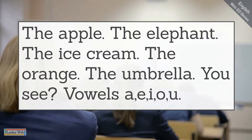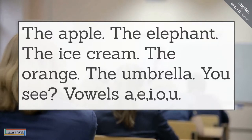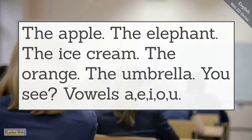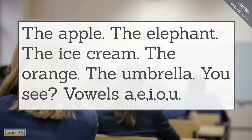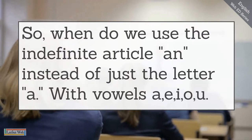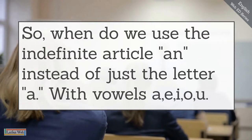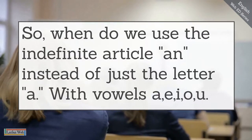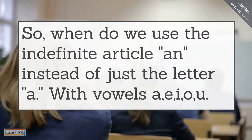Vowels a, e, i, o, u — when we use the word the before those vowel sounds, it sounds more like 'thee'. So when do we use the indefinite article an instead of just the letter a? With vowels a, e, i, o, u.